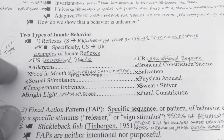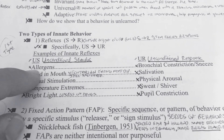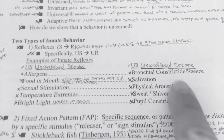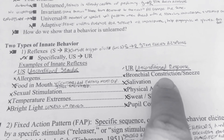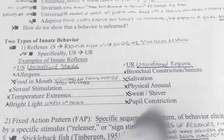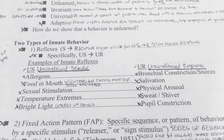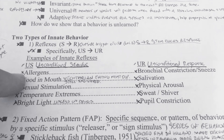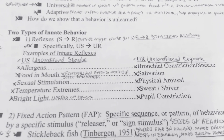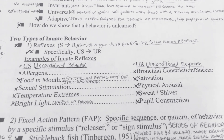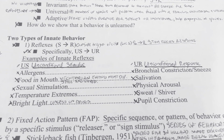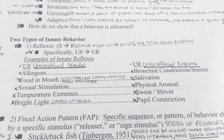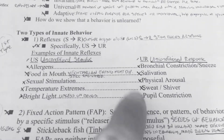Your unconditioned stimulus can be an allergen like dust, and your unconditioned response will be for you to tighten up and sneeze. Another example: a nice tasty steak in front of you — your mouth will naturally salivate. The same applies to temperature extremes triggering sweat, or bright light causing pupil constriction.